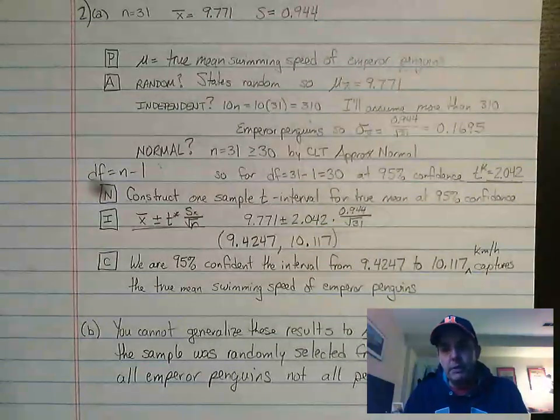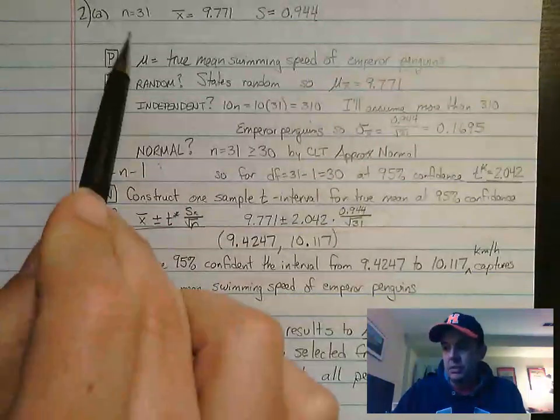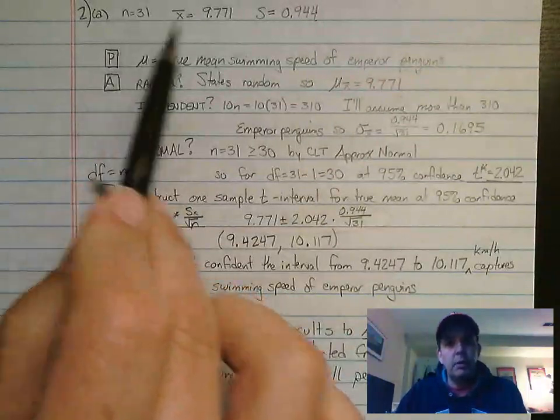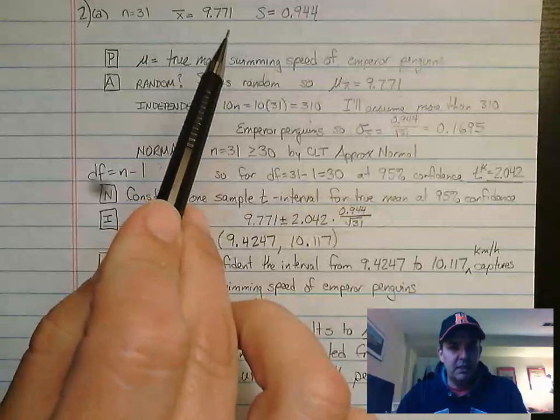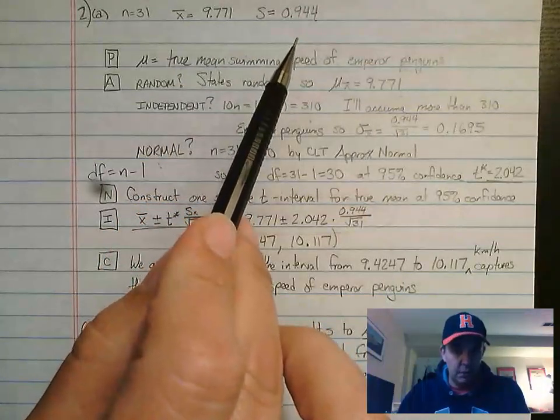It talks about emperor penguins and their swim speed in kilometers per hour. We took a random sample of 31 emperor penguins. They had a mean swim speed of 9.771 kilometers an hour with a standard deviation of 0.944.